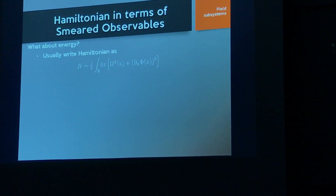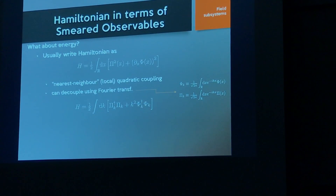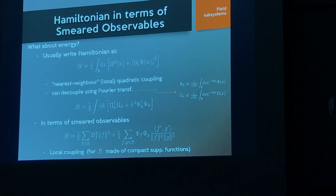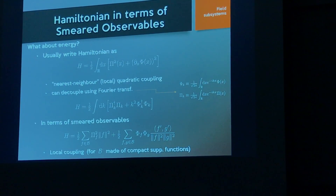We can rewrite the Hamiltonian using this formalism. Usually it has a derivative coupling — expanding the derivative as a finite difference approximation gives a nearest-neighbor-like quadratic coupling. Normally we diagonalize via Fourier transform, the meta-eigenbasis of the Hamiltonian. In terms of smeared observables it's not diagonal but has a quadratic coupling. With compactly supported basis functions, derivatives are also compactly supported and each mode couples to only a handful of others — like a virtual lattice of harmonic oscillators, which we can use to port calculations from actual lattice computations.